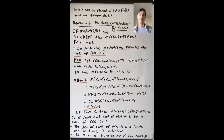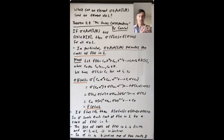In the case where we looked at F_p(u)(u^(1/p)) as an extension of F_p(u), we saw that an automorphism of the bigger field fixing the smaller field was determined by where it sent the element u^(1/p). And we had to send that element to a root of the polynomial x^p − u.